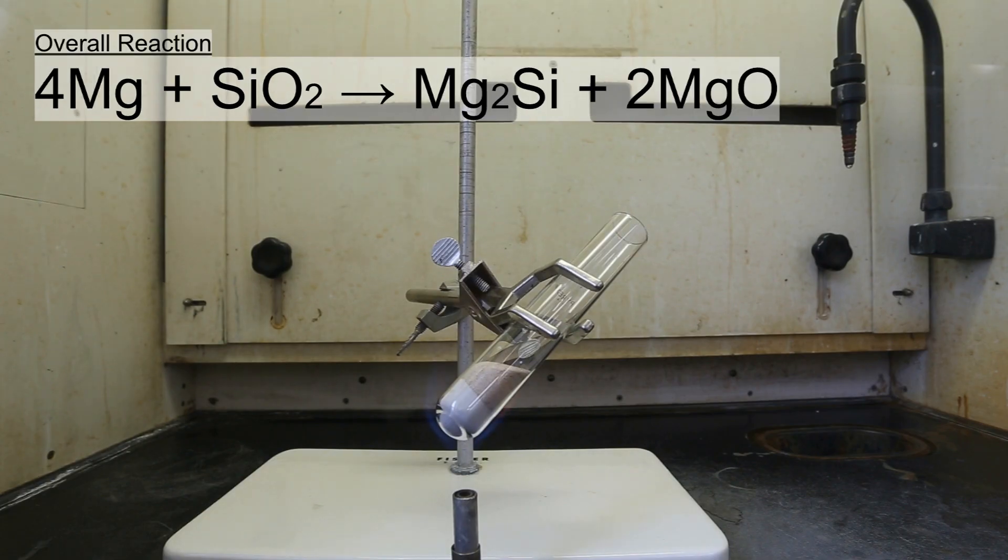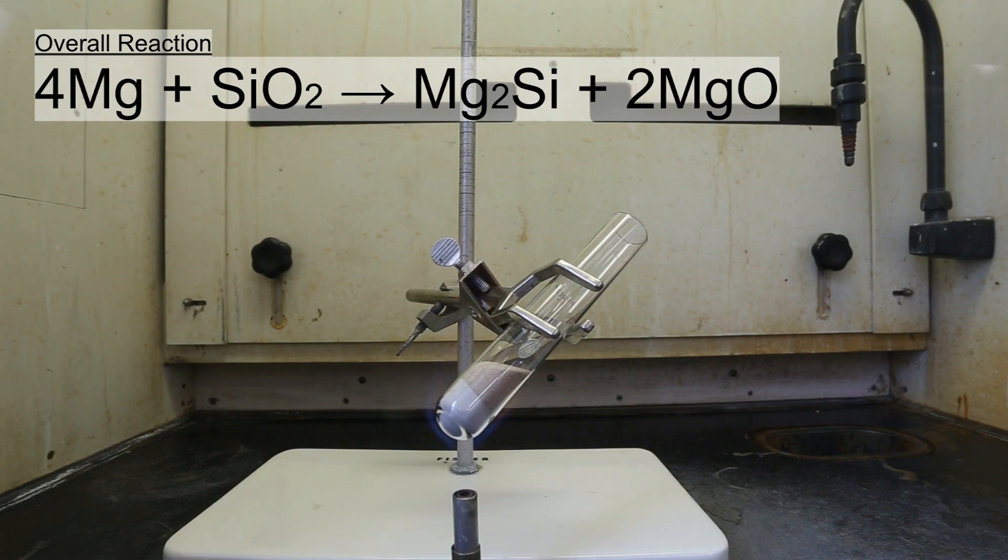The overall reaction is shown above, and from this reaction, we can see that you need about four times as many moles of magnesium metal as you do silicon dioxide. In terms of mass, this means that the magnesium metal should always be about 1.6 times the mass of the silicon dioxide.